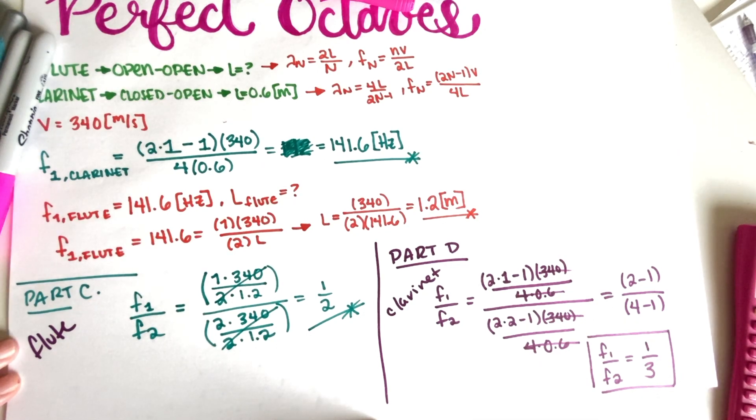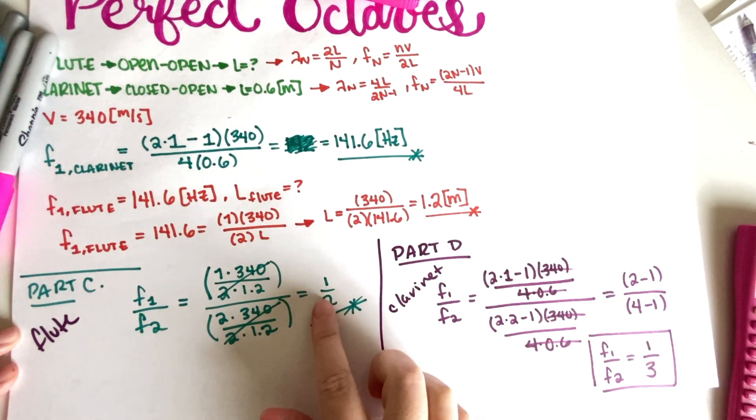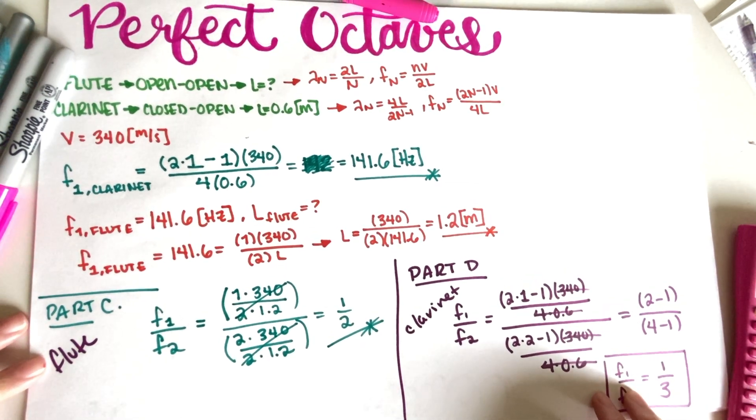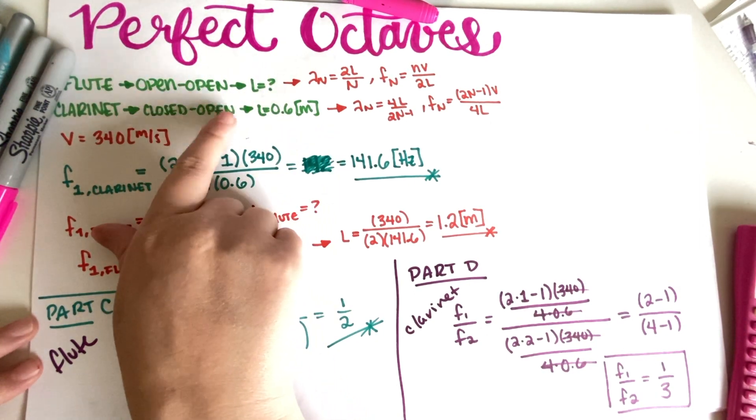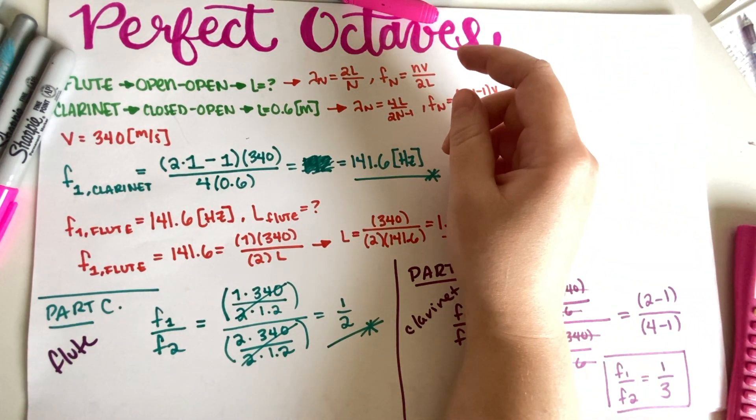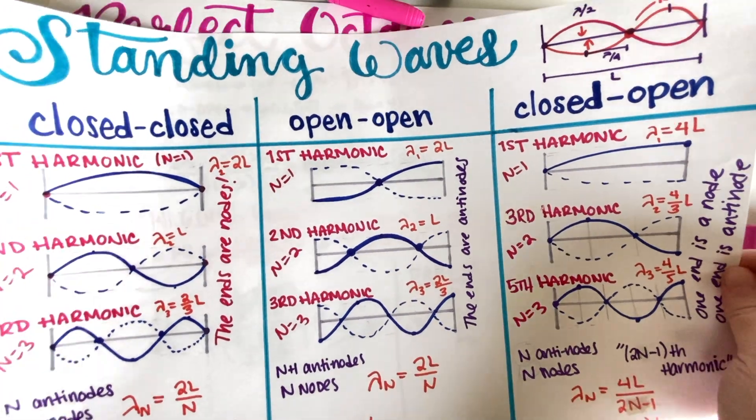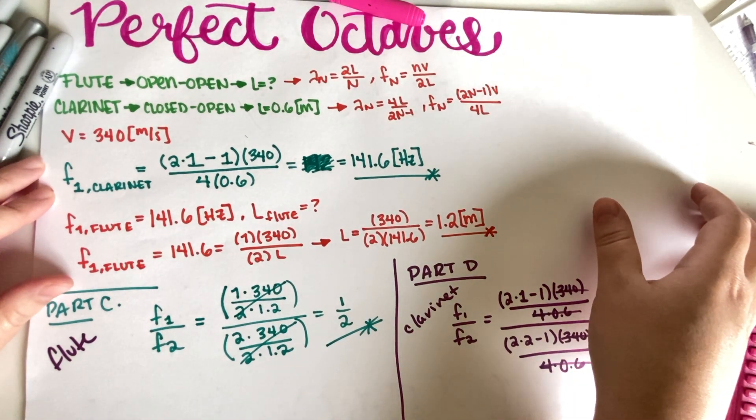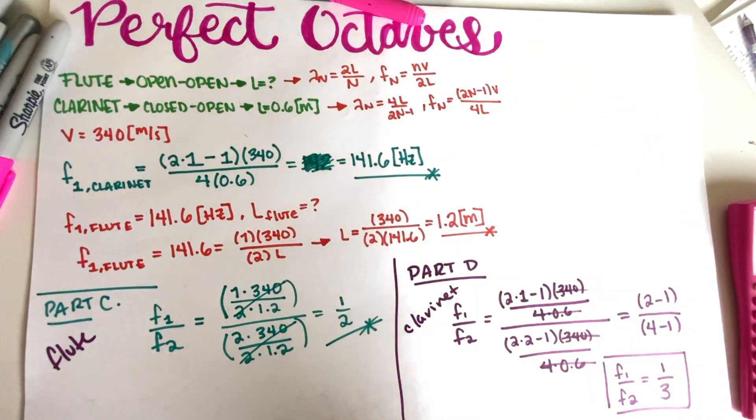And then lastly, is this ratio the same as it was for the flute? Well, no, obviously not. For the flute, the perfect octave was one half, and then for the clarinet it was one third. This comes as a consequence that they are structurally different—the flute is open-open, clarinet is closed-open, so we had to use our respective formulas. Again, if you're still unsure as to where I'm pulling them from, it all comes from the summary that we did on the introduction video. So feel free to go ahead and look at that if you're still feeling a little confused on the subject. And with this we are done with our practice problems. So I hope you guys found this useful. If you did, please make sure to leave a like and comment, and I'll see you guys on the next video.